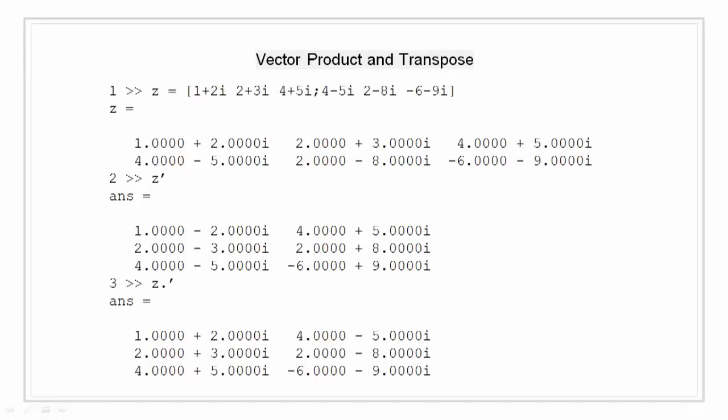Let's take another example. So, we have 1 plus 2i, 2 plus 3i and 4 plus 5i in the first row. And 4 minus 5i, 2 minus 8i and minus 6 minus 9i in the second row. We have two transpose for a complex element matrix. First is the complex conjugated transpose that is the normal transpose that is used. First, denoted by Z transpose, we get a 3 by 2 matrix with values as 1 minus 2i, 2 minus 3i, 4 minus 5i and so on.